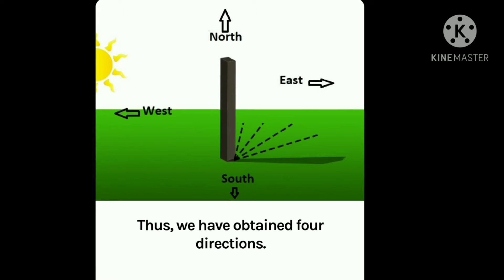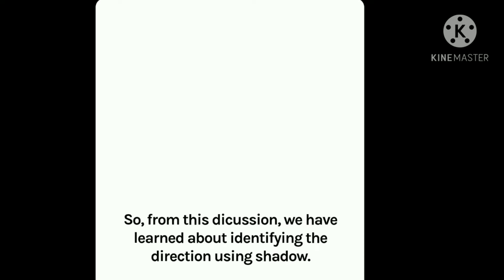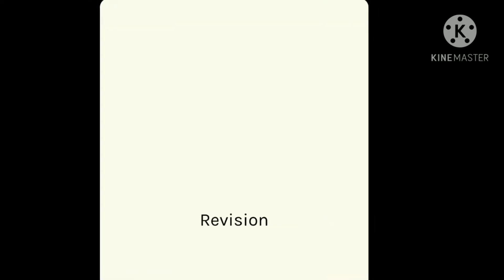Thus, we have obtained four directions: north, south, east, as well as west. So from this discussion, we have learned about identifying the directions using shadow.